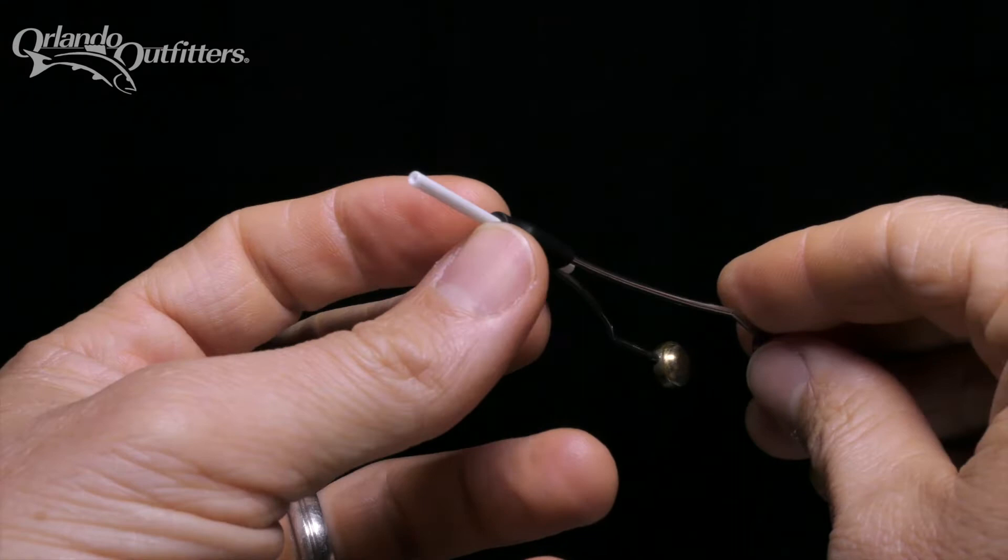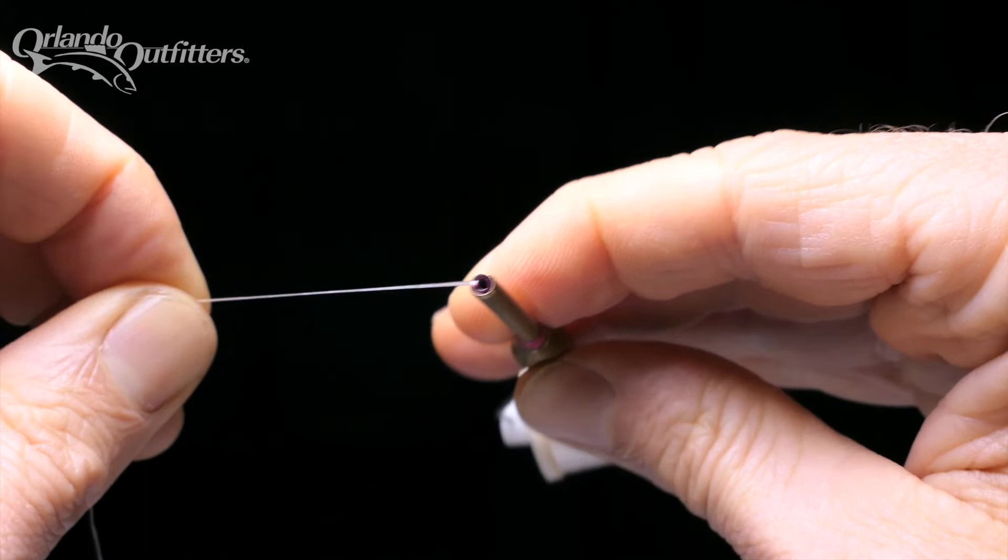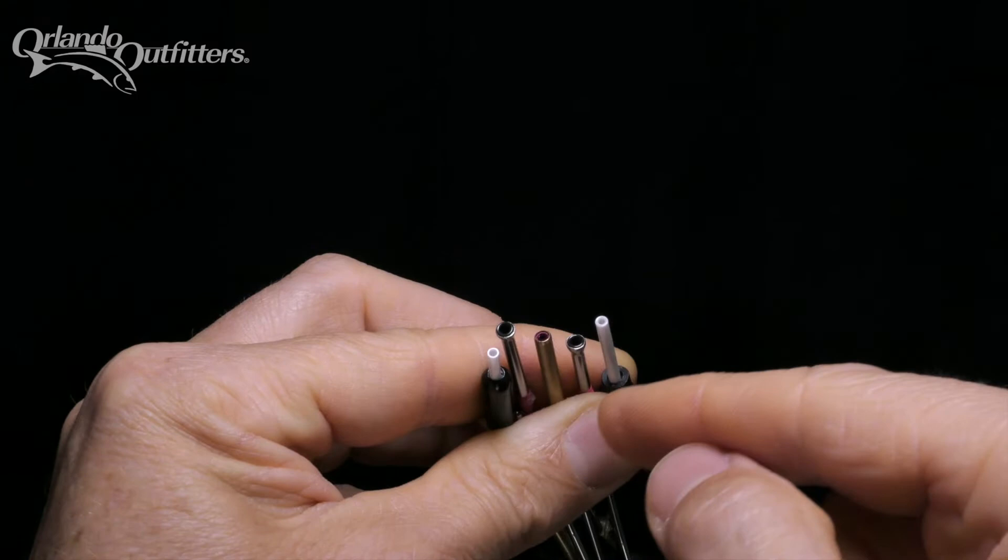High quality bobbins either have a barrel made of a smooth, hard material like ceramic that resists wear, or they have an insert at the end of the barrel through which the thread runs. The insert provides a smooth surface for the thread to run over.